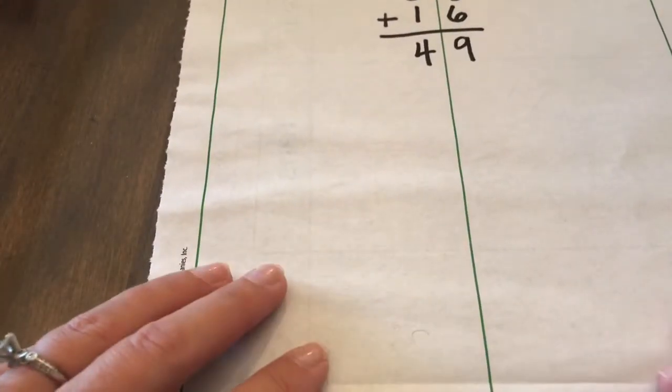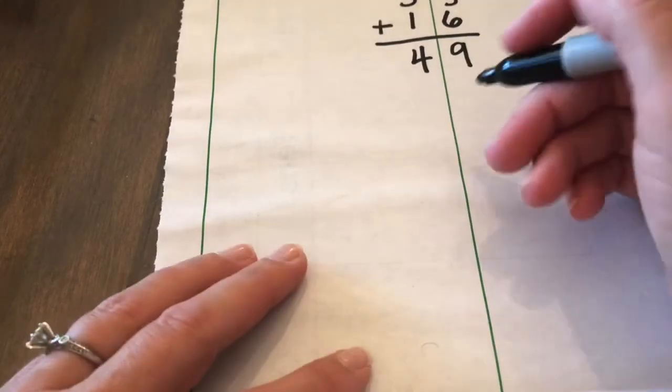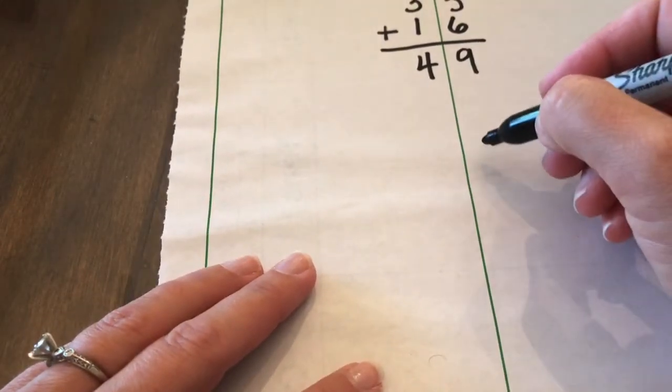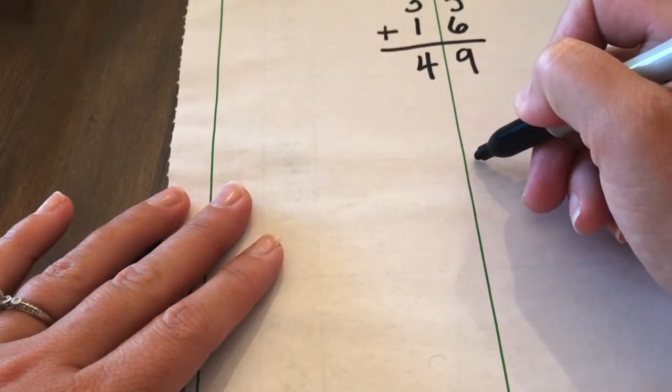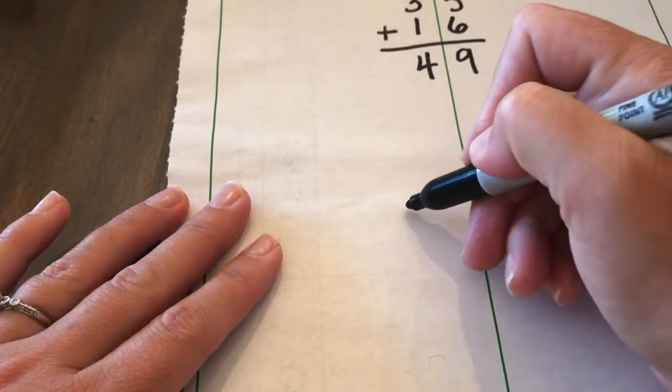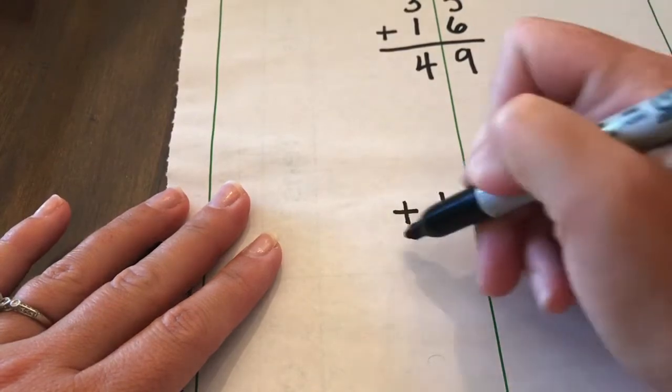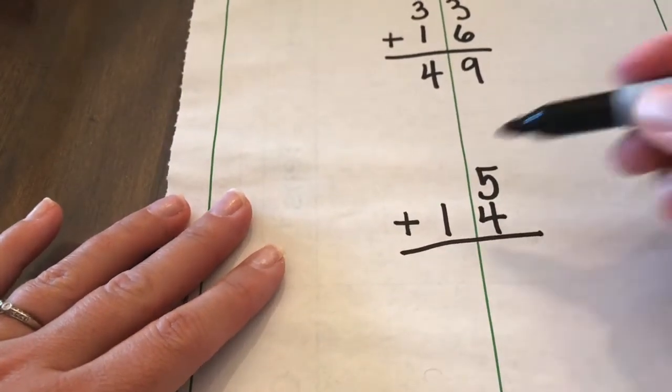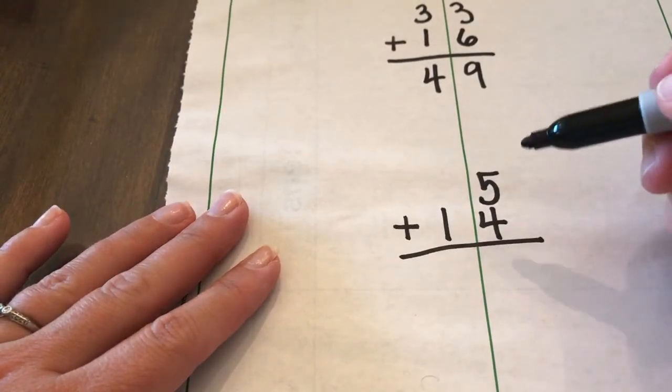There's some other problems on your paper that look a little bit funny. They're going to look a little bit different to you because what they've done in the book is they've put the number like this. So let's say you have 5 plus 14, and it looks a little bit funny when the big number is on the bottom, but you're not going to solve the problem any differently.